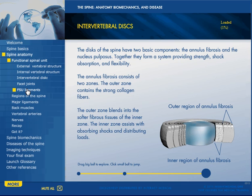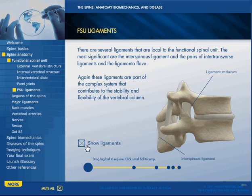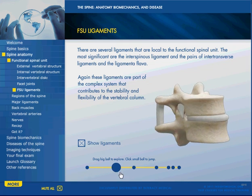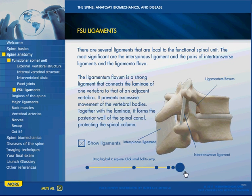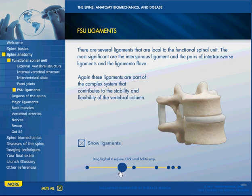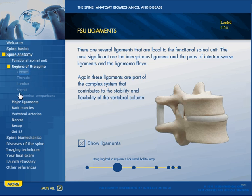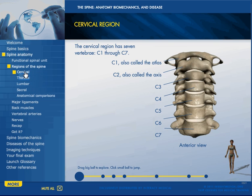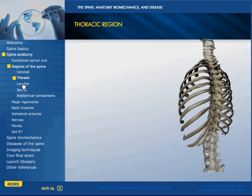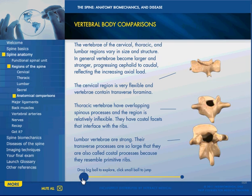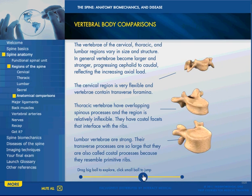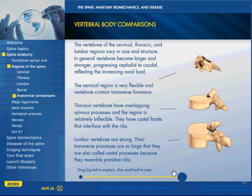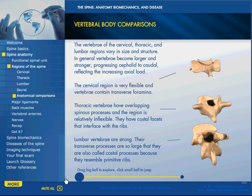These are the main ligaments of the spine that we can turn on and off — the ligaments of the spinal unit. We discuss the different regions of the spine: we look in detail at the cervical region, thoracic, lumbar, sacral, and anatomical comparisons of the various bones by dragging the ball. We can see the morphological differences between bones from different regions.